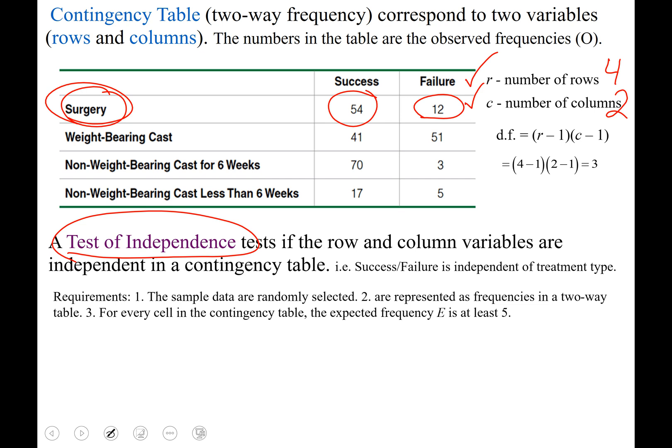Requirements: sample data is randomly selected, that data is represented in a two-way table. Every cell in the table has an expected value of at least five.